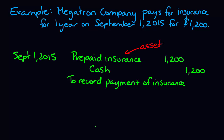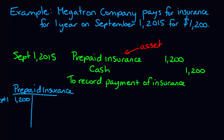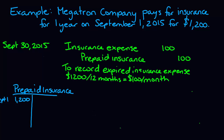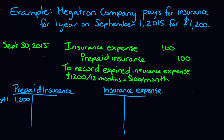Now if you consider our T-account for the prepaid insurance account, which is an asset account, we're going to have a $1,200 debit. Each month, $1,200 divided by 12 is used up of that insurance. So each month we're going to make a journal entry — we're going to lower our prepaid insurance account by crediting it for $100 and move that amount to the expense account, insurance expense. The calculation: $1,200 prepaid insurance divided by 12 months equals $100 per month. Every single month we are going to do a journal entry just like this.